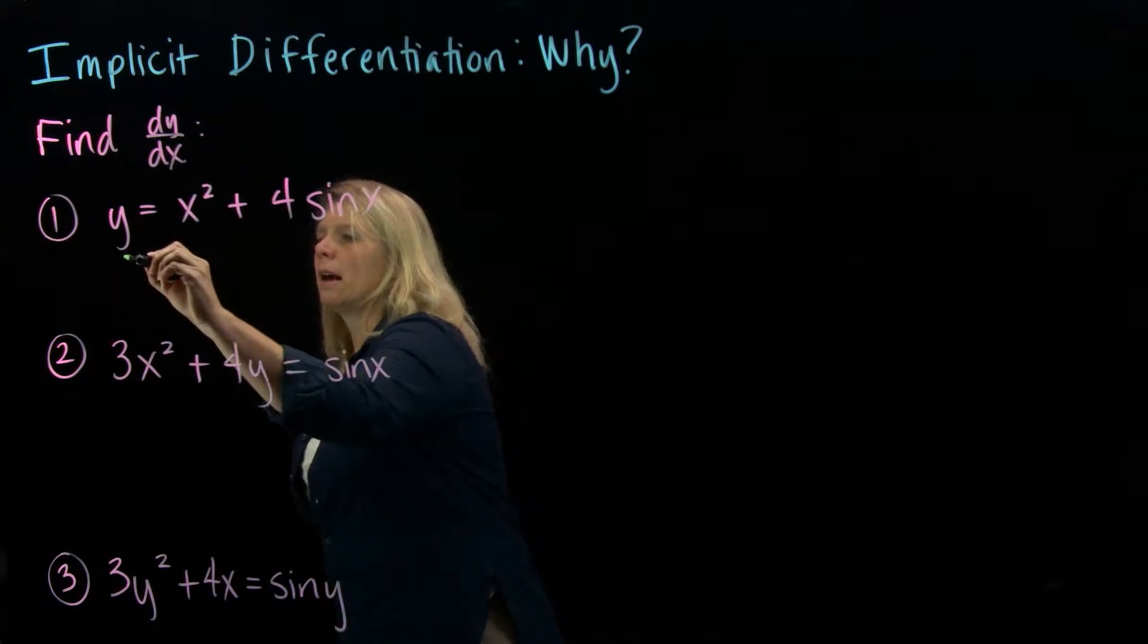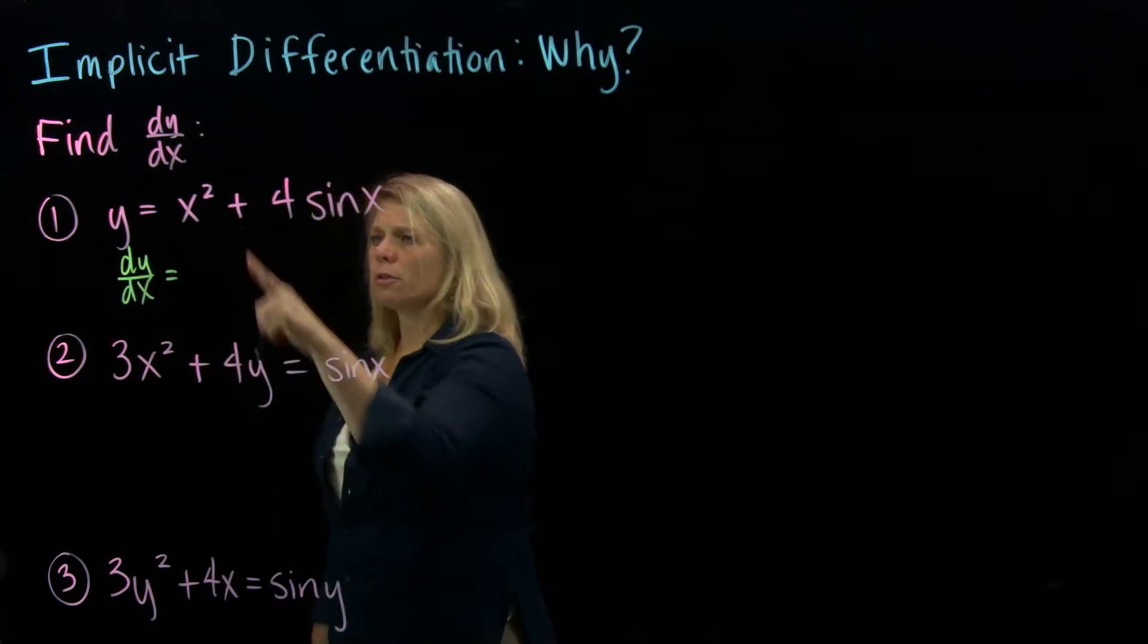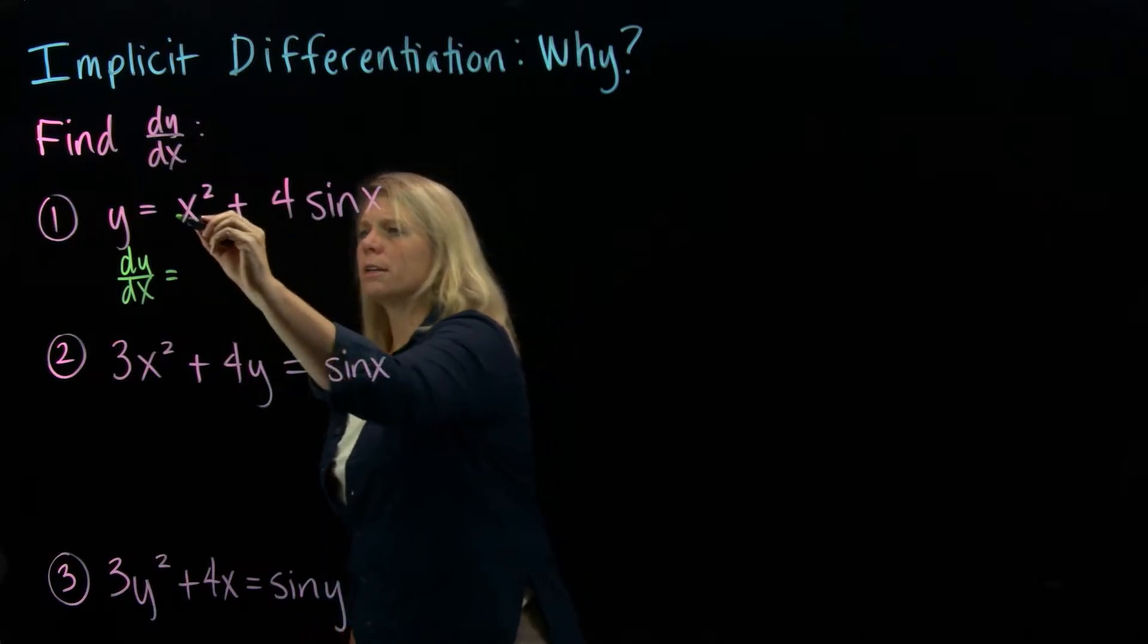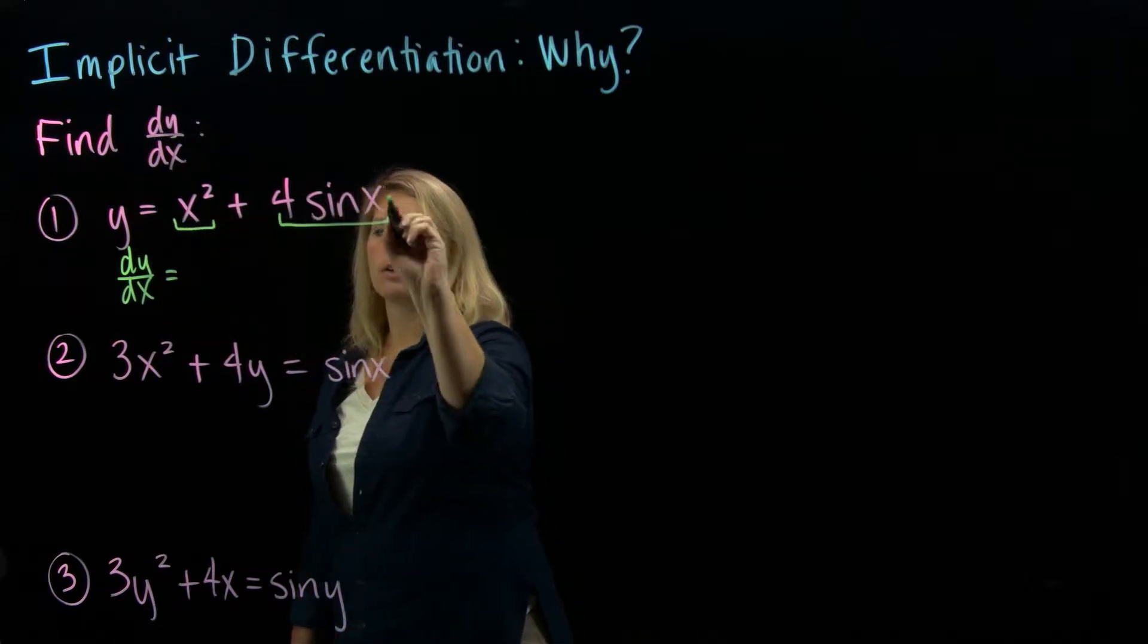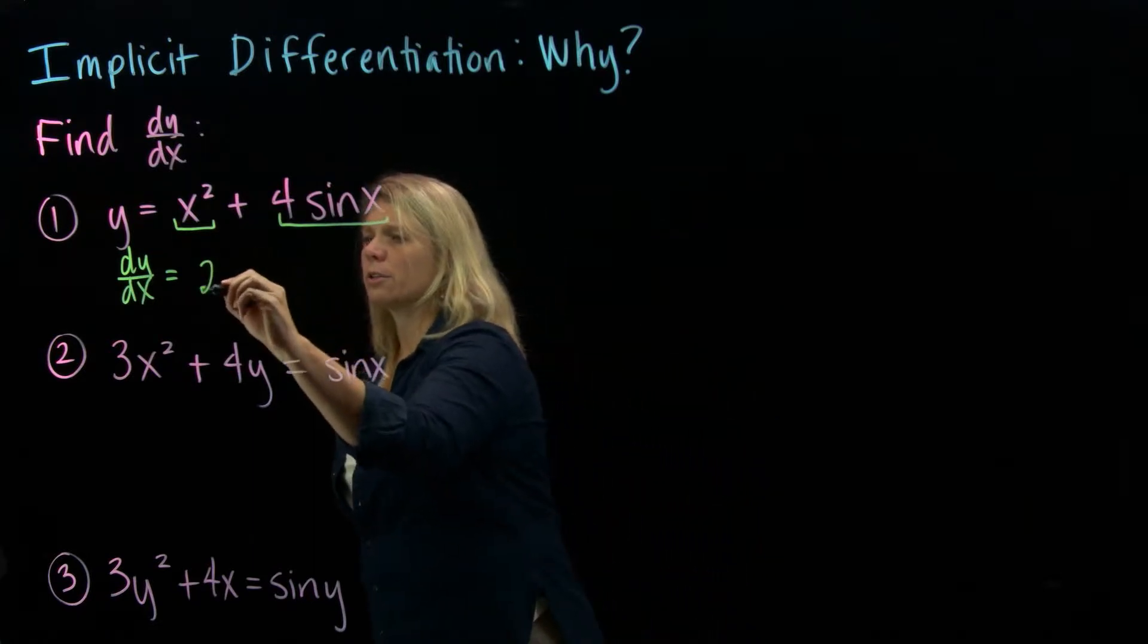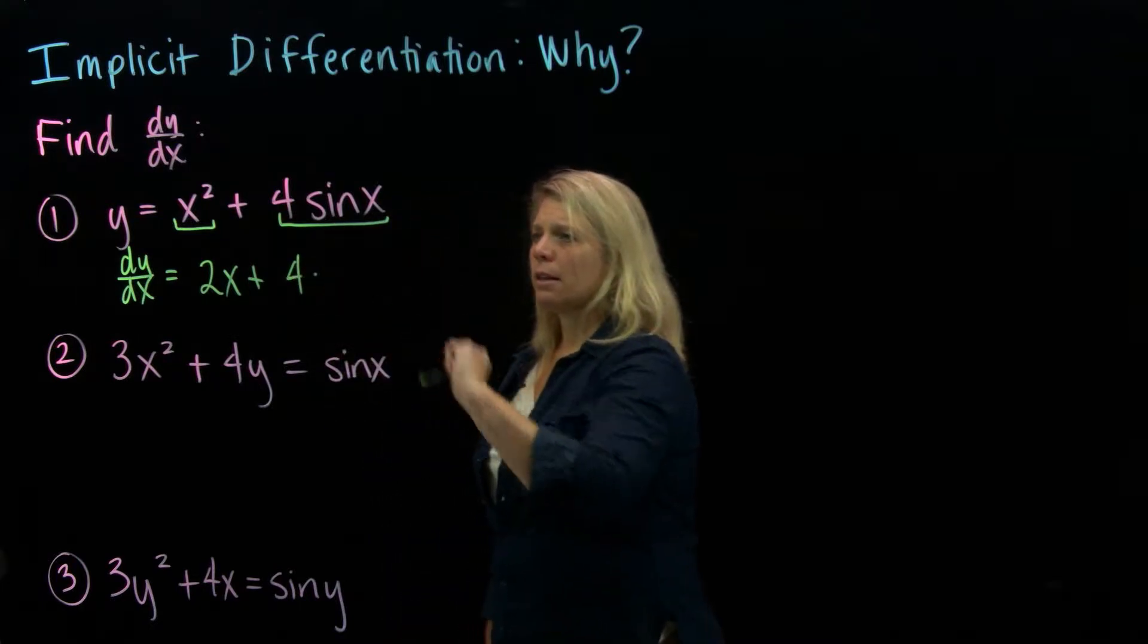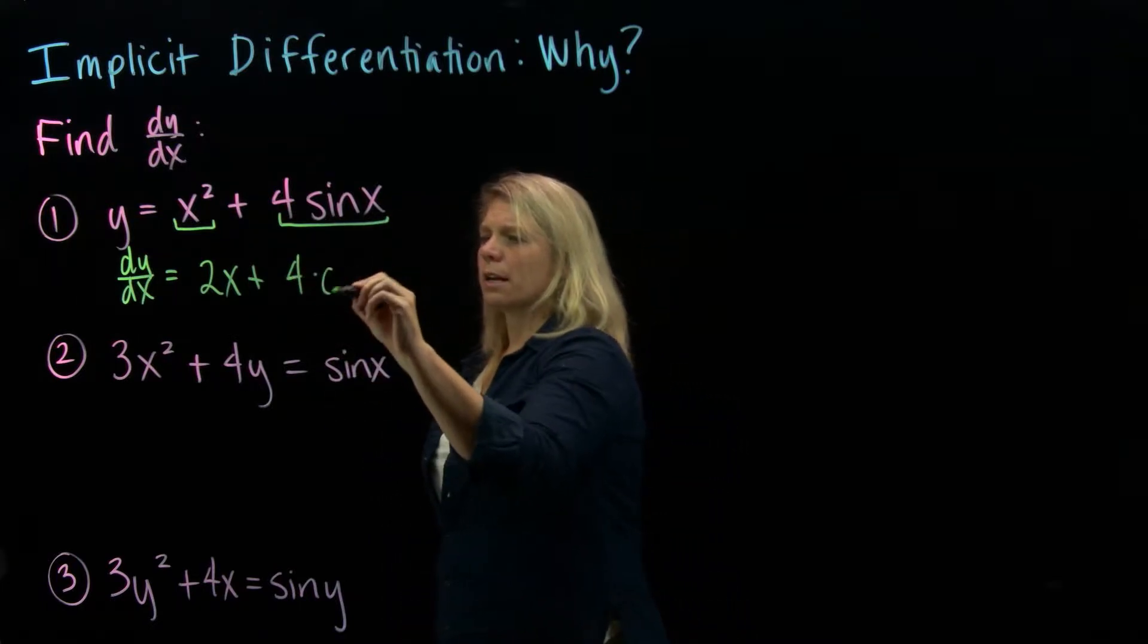So we're going to just go ahead and do that, just as an easy refresher of some derivative rules. I have a sum of two functions here, so we have a rule about finding a derivative of a sum of functions, we just do that term by term. So derivative of x squared is 2x, and then the 4 will come along, and then the derivative of sine of x is cosine of x.